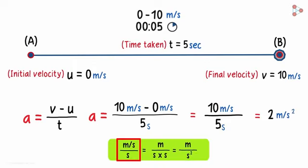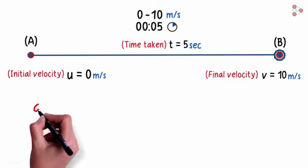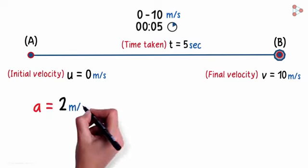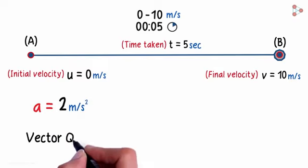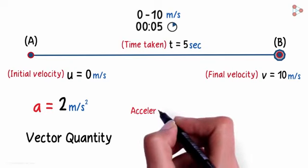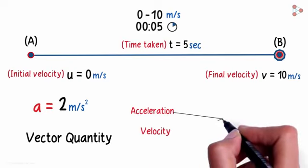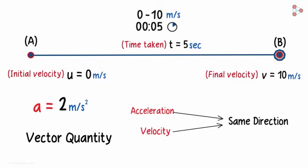This one is more intuitive but this one is a bit neater I would say. So the acceleration in this case will be 2 meters per second squared. And acceleration is also a vector quantity. Here, acceleration and velocity are in the same direction. There are many more important concepts about acceleration which we will cover in the coming videos.